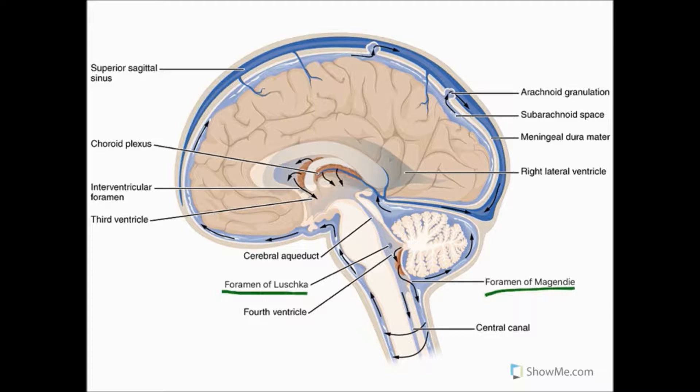Cisterns are any openings in the subarachnoid space created by the separation of the arachnoid and pia mater. For example, in this diagram we can see the cisterna magna, also known as the cerebellomedullary cistern, found here.